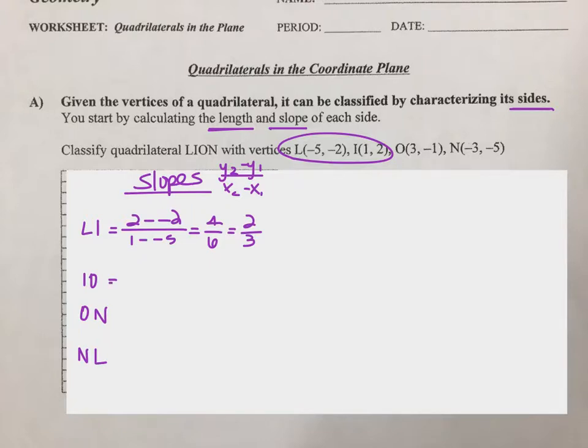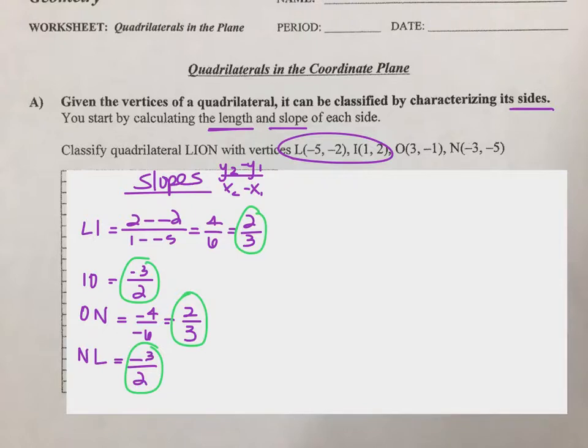We can keep continuing this process over and over to find all of the slopes. If you need to pause this video to do that you can. I'm going to pause and work these out in my head and then give us the answers. Okay, so these are the slope values that I got when I continued that slope formula with each set of ordered pairs.